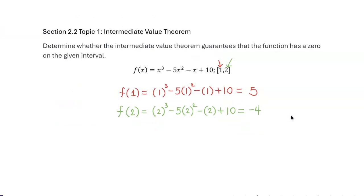So I'm going to say determine whether this theorem guarantees that the function has a value. Yes, it will. So my answer will be yes because f(1) is positive and f(2) is negative.